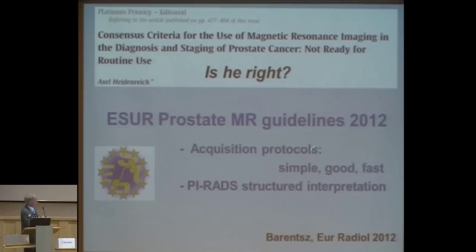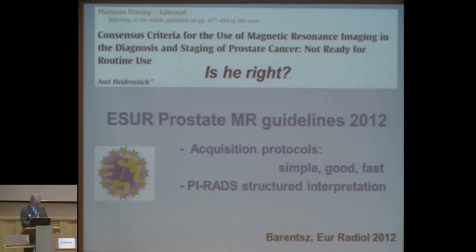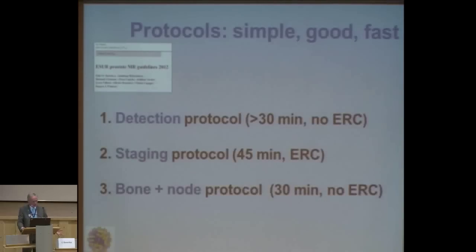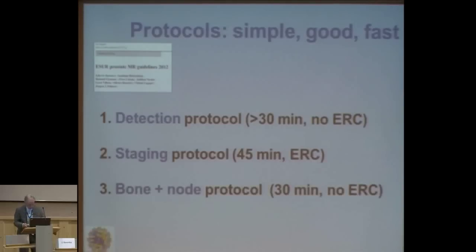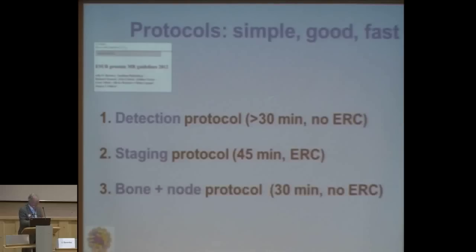We have protocols for detection — where is the tumor, how aggressive is it, where is it located — for staging — is there extra-capsular disease — and for information about nodes and bone. Three simple protocols. Only the staging protocol requires an endorectal coil if you want it, which takes about 15 minutes more. The others do not. This makes it really suitable for daily practice.